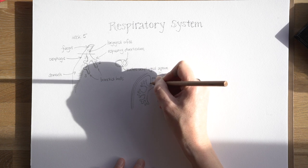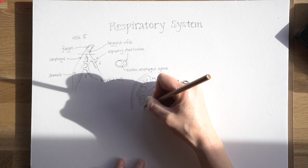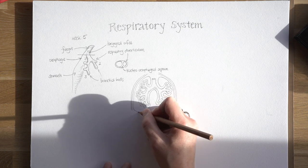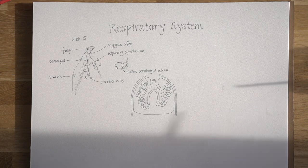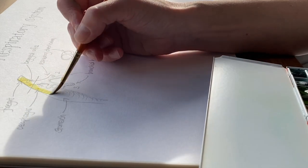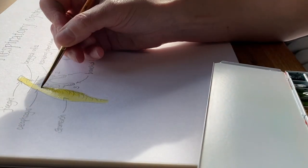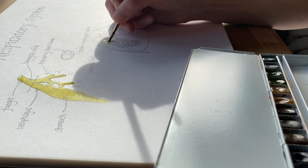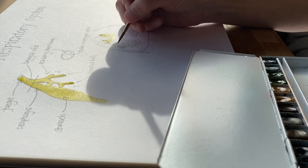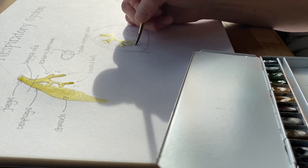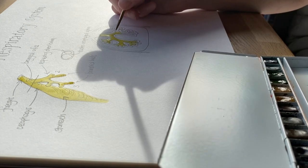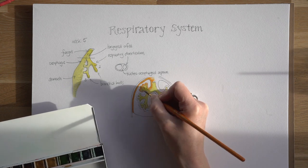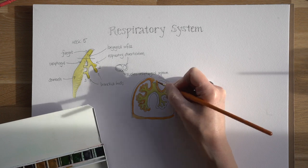This cavity essentially formed from the clefts that appeared at the very edges of the trilaminar germ disc. When the germ disc folded, those clefts became trapped inside the embryo, meaning the cavity is completely lined with lateral plate mesoderm — a somatic or parietal layer next to the body wall and a splanchnic layer around the developing viscera. I'm now using traditional colours: yellow for the endoderm gut tube and developing lungs, and orange for the mesoderm lining this cavity.